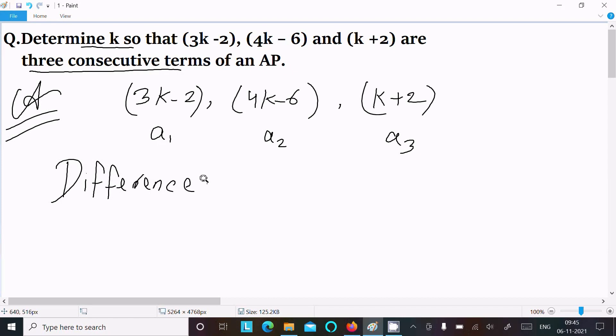of terms must be the same because these terms are consecutive, so a2 minus a1 equals a3 minus a2. The difference is the same: second term minus first term and third term minus second term, because these terms are consecutive terms of an AP.